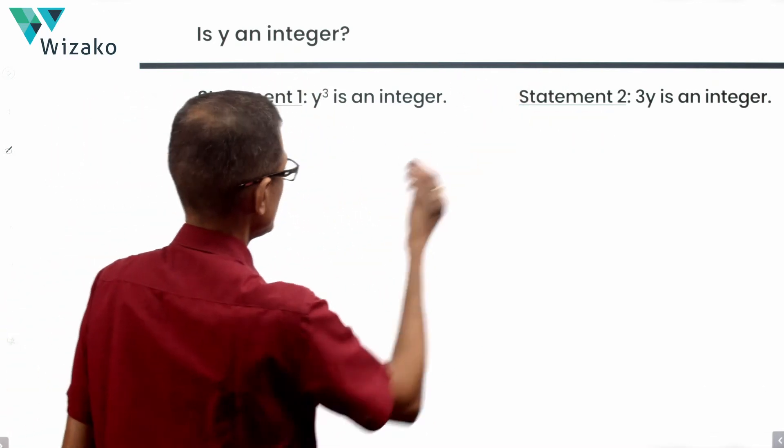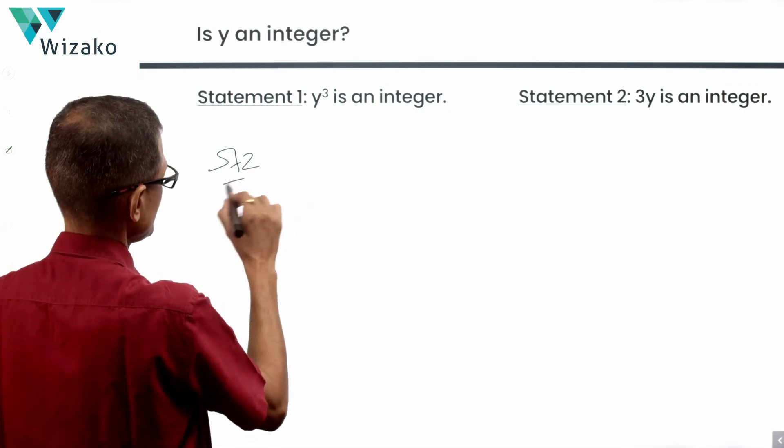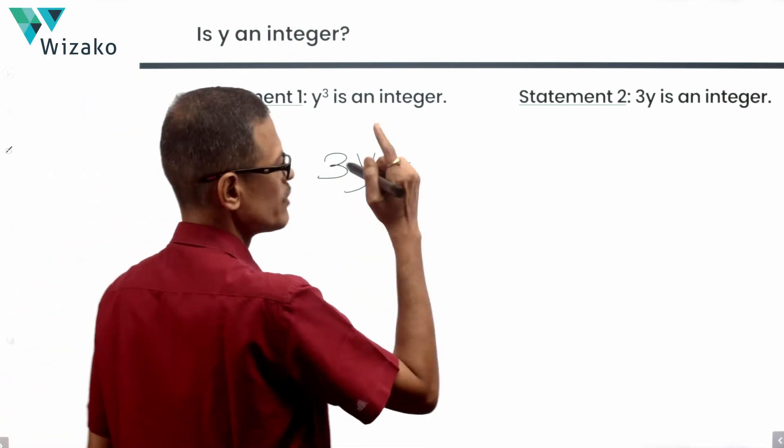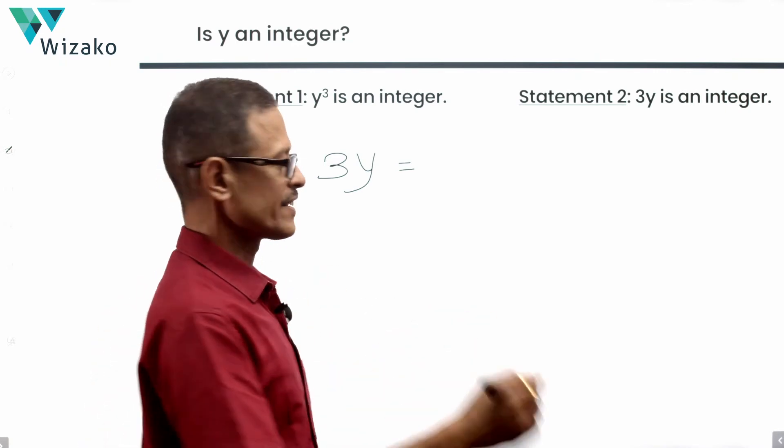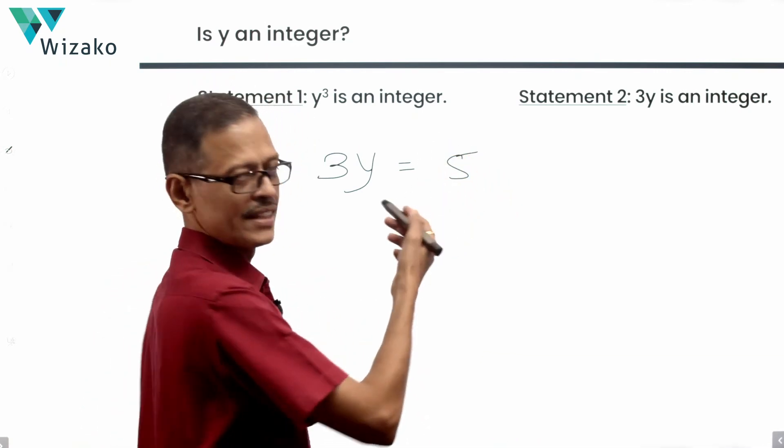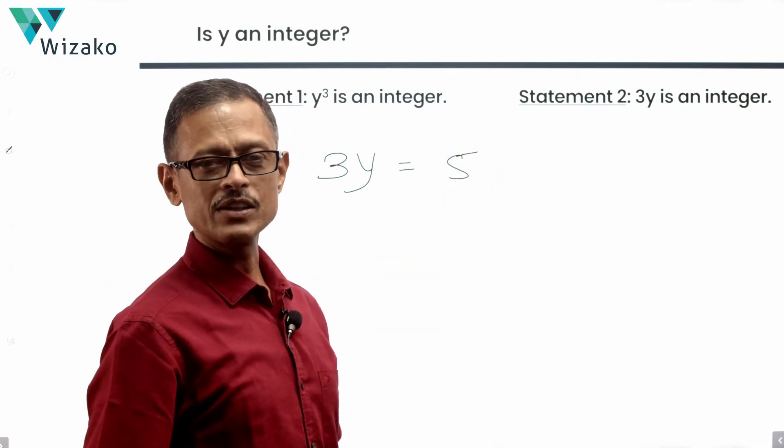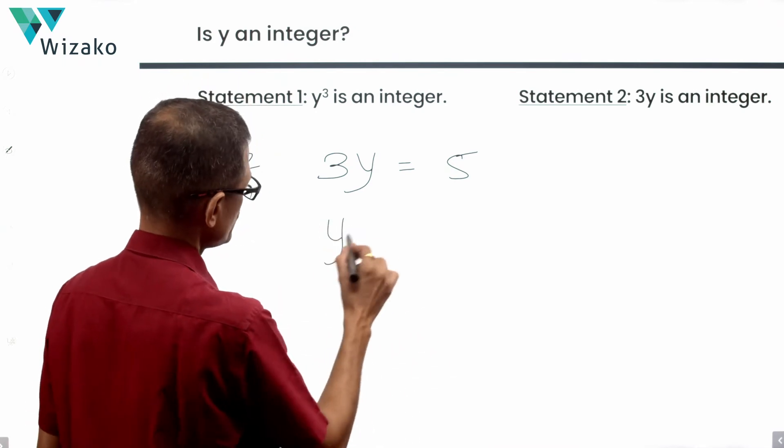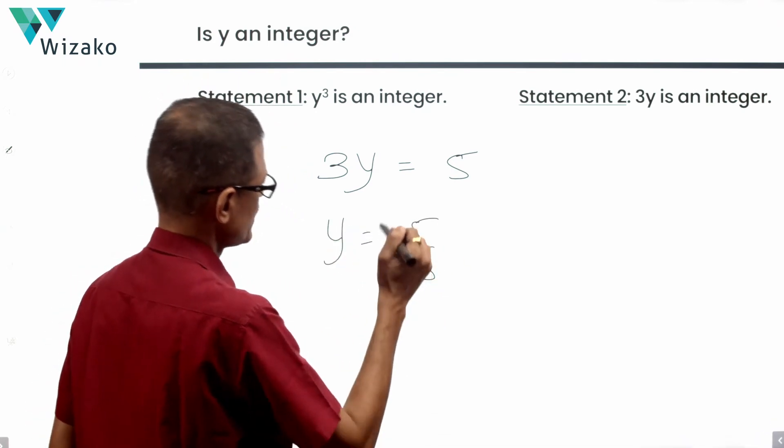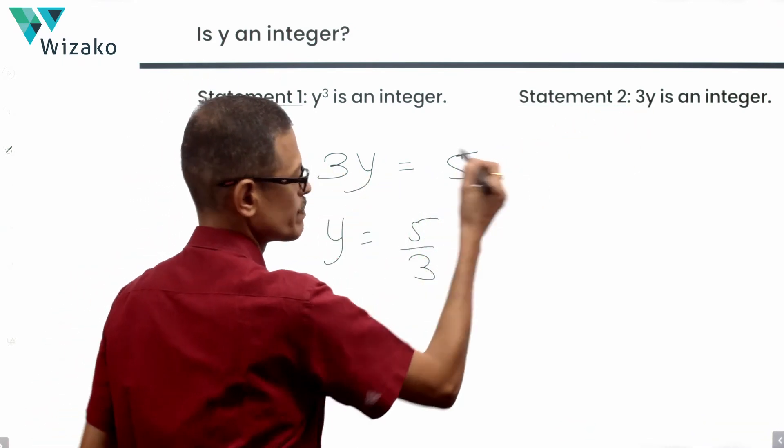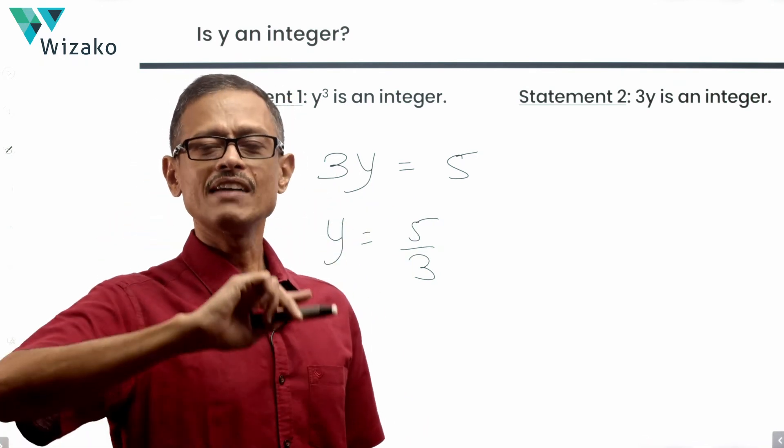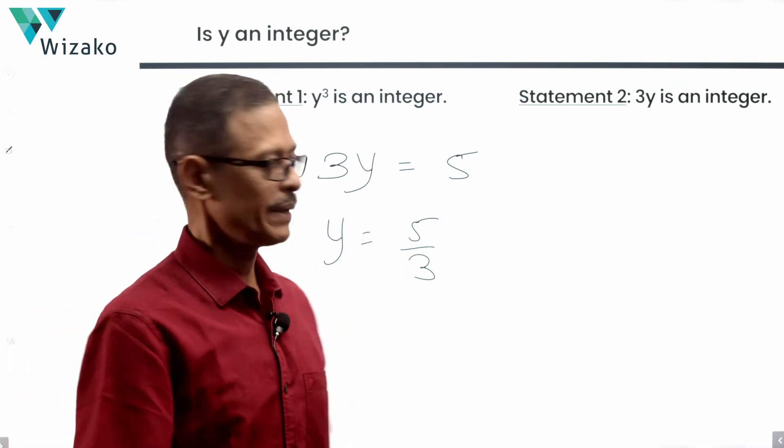Let's take 3y to be an integer from statement 2. I'm going to pick such a value for 3y, which will make y to be not an integer. Take 3y to be equal to 5. The counter-example that we had in statement 2. So, y happens to be a non-integer. 3y is an integer as mentioned in statement 2. We pick such an example. And we pick such an example where y will not be an integer.